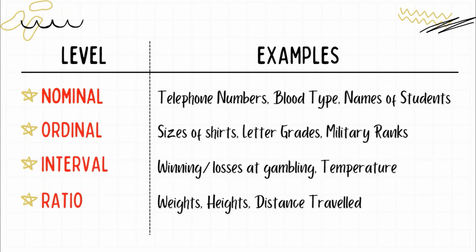For nominal, examples are telephone numbers, blood type, and students' names — even if they differ, the order does not matter. For ordinal, examples are sizes of t-shirts, letter grades, and military ranks — the order is very important. If you are a small size, you cannot wear triple extra large. The order matters.